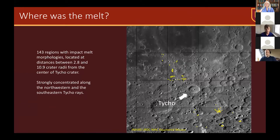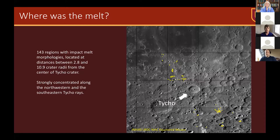In our preliminary study looking at things associated with Tycho crater, there's a little arrow pointing to where Tycho is, and all the little yellow areas to the northwest along the prominent ray and off to the southeast are areas where we found these classic-looking melt morphologies. We found 143 of these regions — not necessarily one melt deposit per region, so don't take that as a hard count of distinct melt units. They cluster in range from about three crater radii to about 11 crater radii away from Tycho.